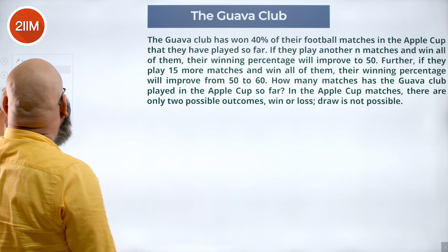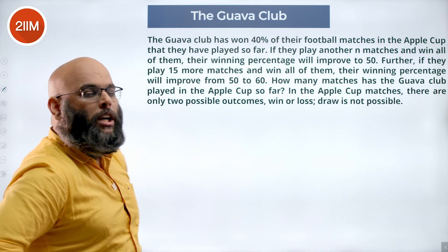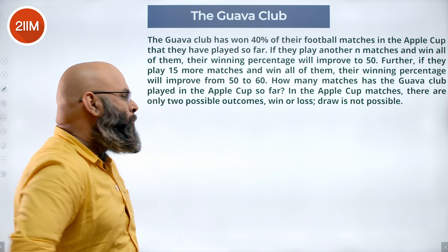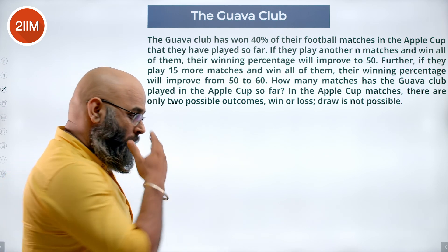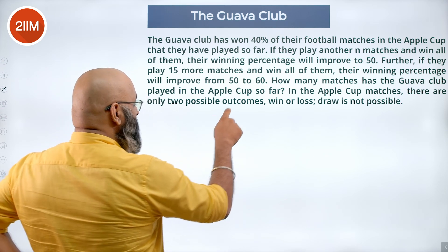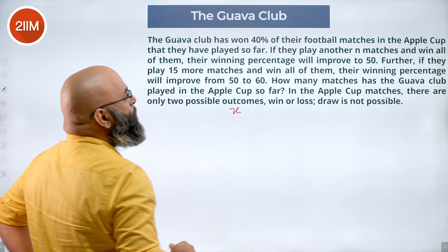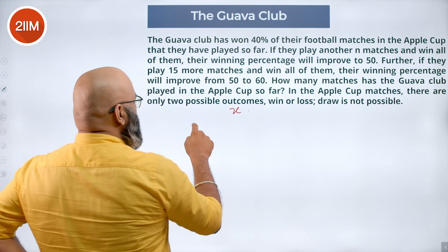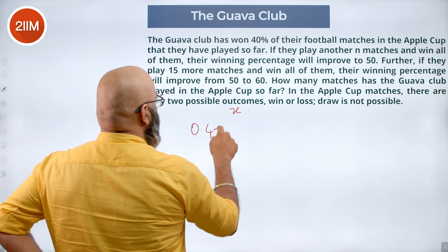The question says they have won 40 percent of their matches until now. We don't know how many matches they have played, so let's say the number of matches that they have played is x. Now we know they have won 40 percent of x, or we can say 0.4x.